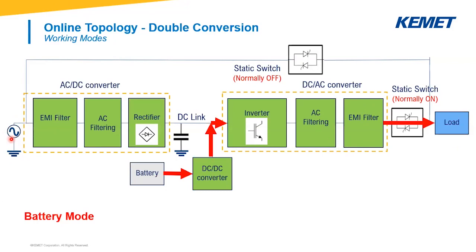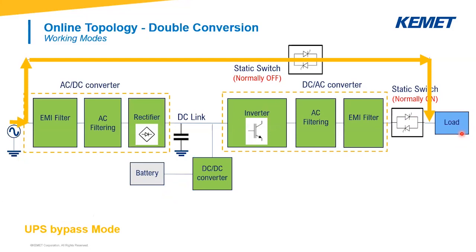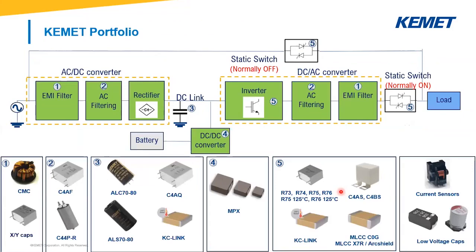During battery mode — invoked as soon as we have a failure on the mains or a loss of input power — power is taken from the battery and follows the path: DC-DC converter, DC-AC converter, then the load. Finally, the third mode is the UPS bypass mode. In this case, the entire UPS is bypassed and power is taken from mains. This mode could be used in case of UPS failure, but also during maintenance of the UPS itself.